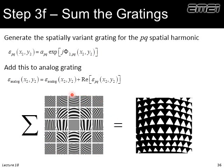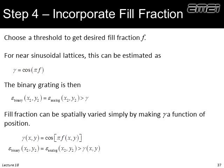The last step is incorporating a spatially variant fill fraction. Assuming our reconstructed lattice has a roughly analog or cosine profile, we make a pretty good guess of the threshold: γ = cosine(π·F), where F is the fill fraction. We apply this to make the binary grating. This fill fraction can be a function of position — spatially varied. In which case our threshold is a function of position and we apply it as a function of position, giving us spatially variant fill fraction in addition to spatially variant orientation and lattice spacing.